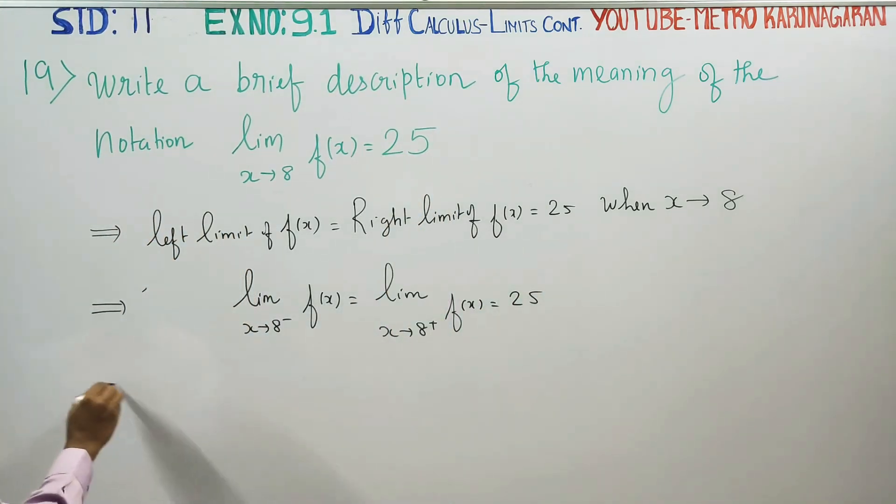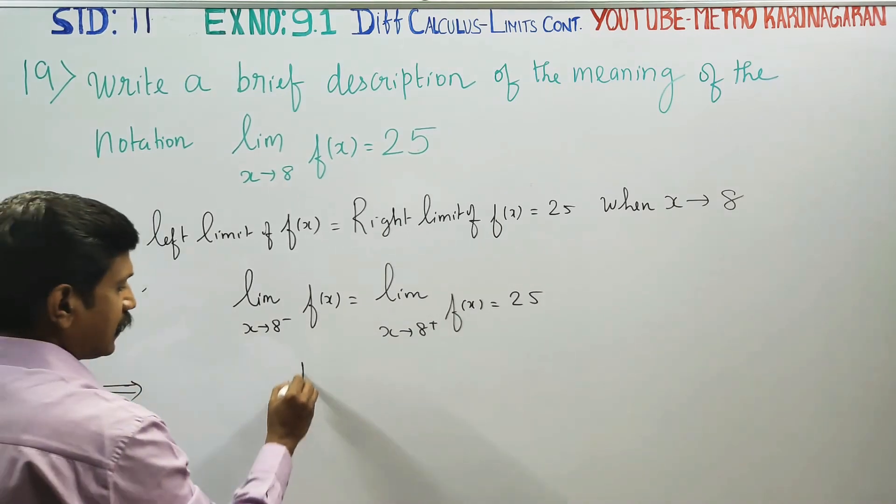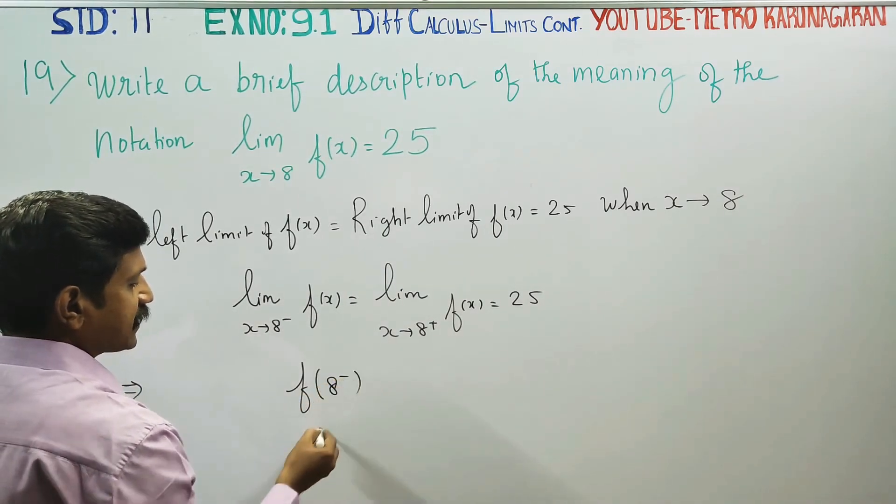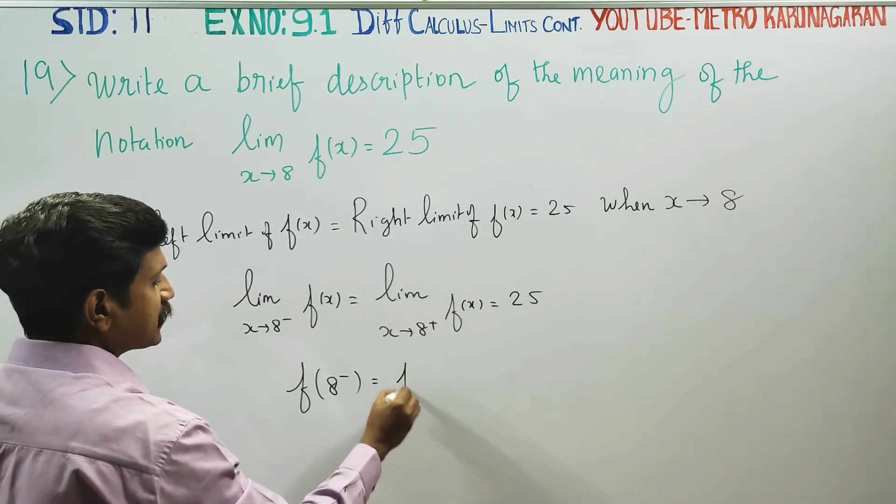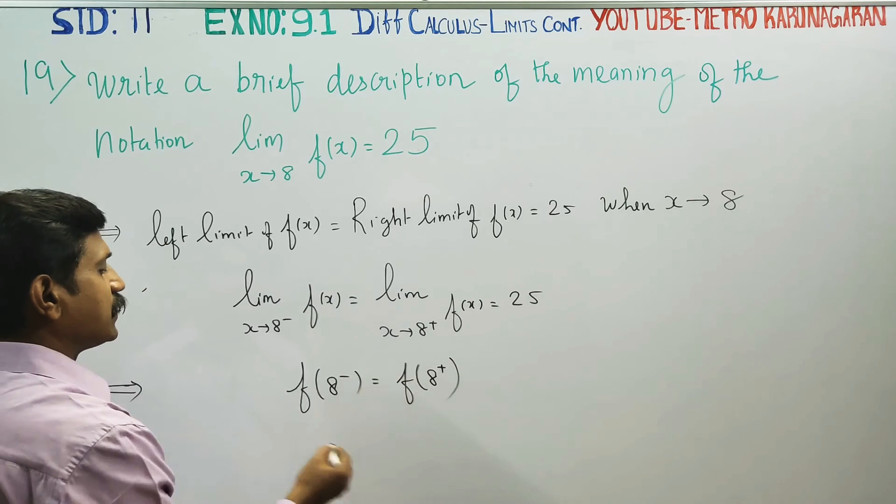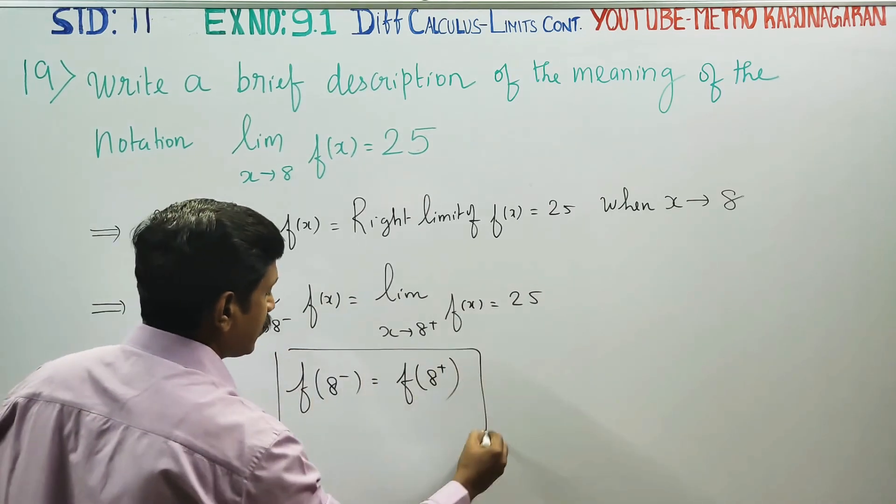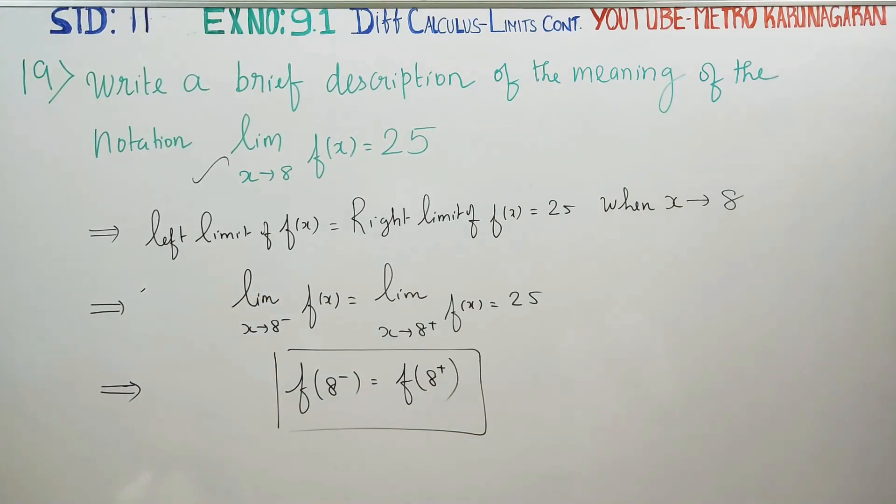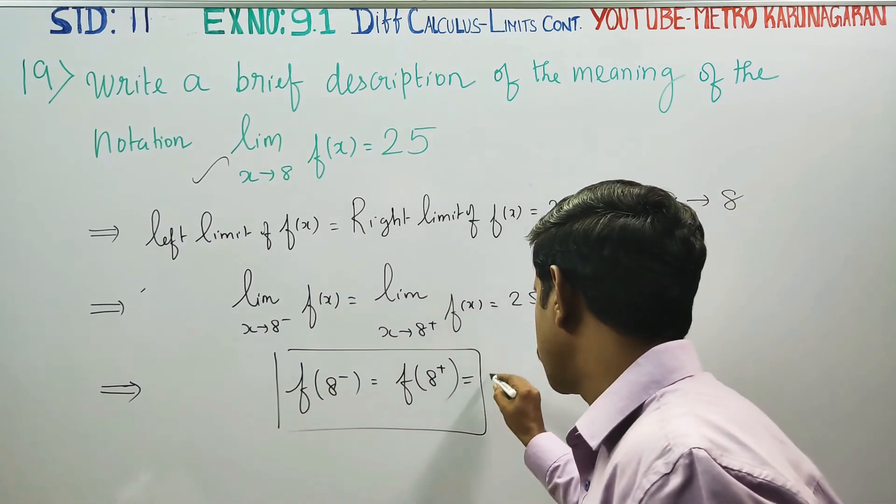Another description is f of 8 minus, left hand side, f of 8 plus, right hand side. These two values, the addition is equal to 25.